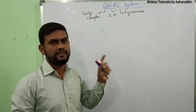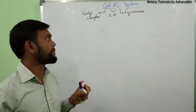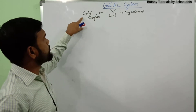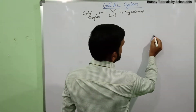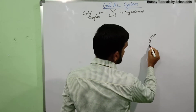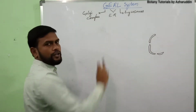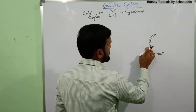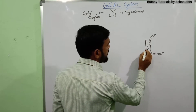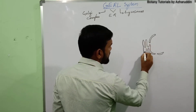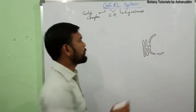In the GERL system, these three cell organelles collectively work as a system for a particular function. We already discussed Golgi complex, endoplasmic reticulum, and lysosomes. The nuclear membrane gives rise to the endoplasmic reticulum — the ER is nothing but blebbing or evagination of the outer nuclear membrane.